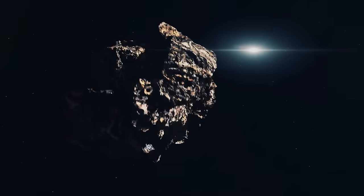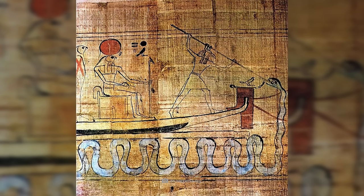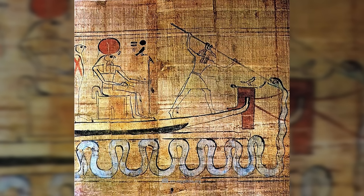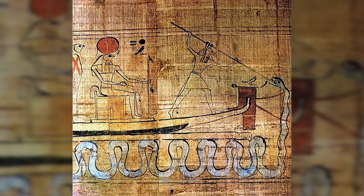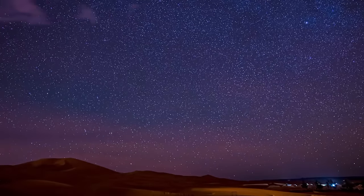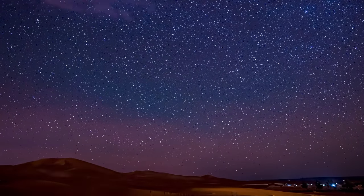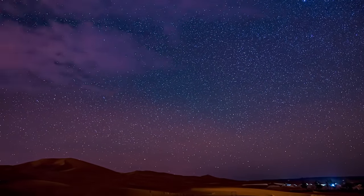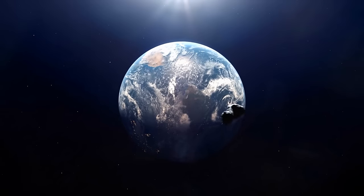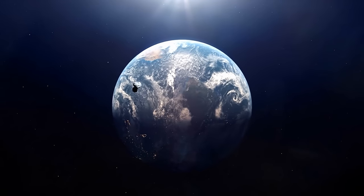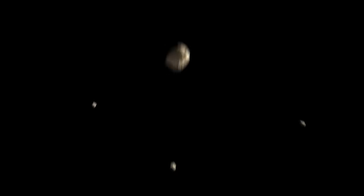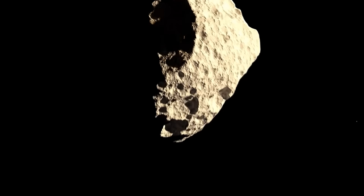The asteroid Apophis doesn't just have any name. This monster of an asteroid was named after the ancient Egyptian god of chaos and destruction. In 2004, the space chunk attracted attention when it briefly triggered an asteroid alarm, meaning Apophis was on a direct path to Earth. Can you imagine the astronomers' horror when they first saw the 340-meter-wide chunk?